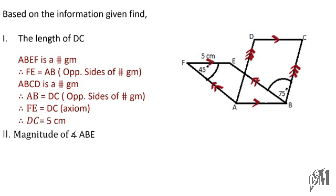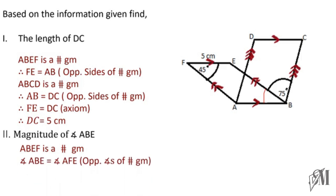The next part asks us to find the magnitude of angle ABE. Angle ABE is opposite to angle AFE in a parallelogram. We know that opposite angles are equal, therefore angle ABE is equal to 45 degrees.